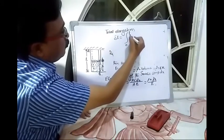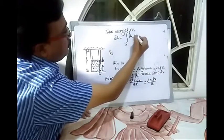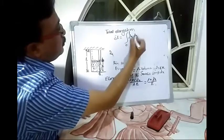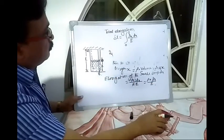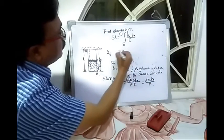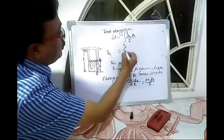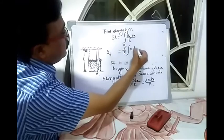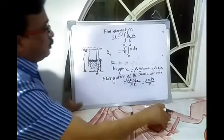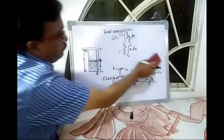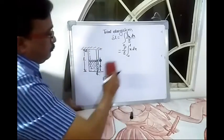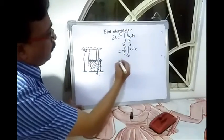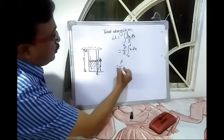That is rho x dx by E, which is equal to rho by E taken outside, and x dx integrated from 0 to L.